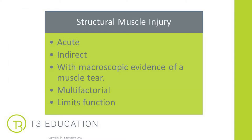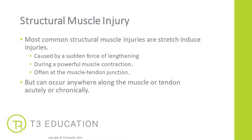A structural muscle injury is an acute, indirect injury. There may be macroscopic evidence of a muscle tear, it's caused by various factors, and it limits function. The difference from a functional muscle disorder is that the functional disorder is often considered to have only microscopic evidence of a tear — so it works like a spectrum. The most common are stretch-induced injuries, caused by a sudden force of lengthening or during a powerful muscle contraction, and most commonly occur around the muscle-tendon junction.